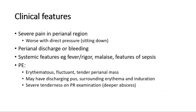For clinical features, anorectal abscesses present with severe pain in the perianal region, which is worse with direct pressure, for example when sitting down. There might be perianal discharge or bleeding. Severe abscesses may present with systemic features such as fever or rigors, general malaise, or clinical features of sepsis.